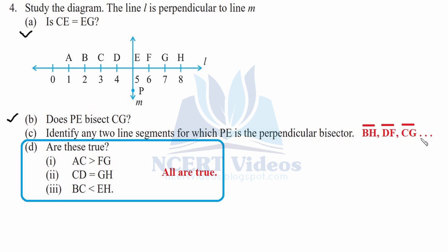Part (d): Are these true? Is AC greater than FG? AC is two units and FG is one unit, so it is true. Second, CD equals GH. CD is one unit and GH is also one unit, therefore these are indeed true. Third, BC is less than EH. BC is one unit and EH is three units, therefore yes, true - one is less than three. That was your fourth question.